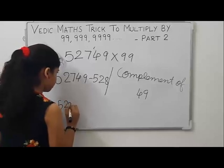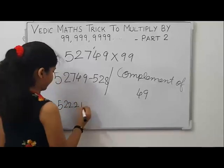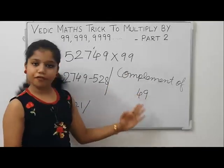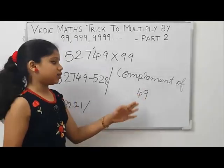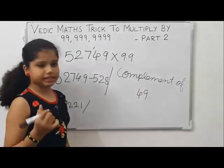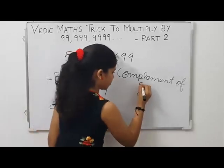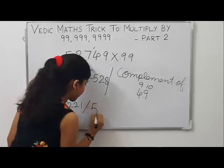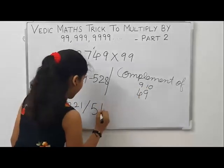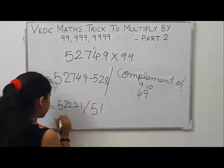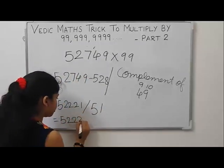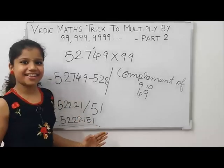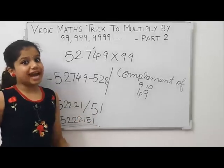Now, 52749 minus 528 is 52221. To get the right hand side, find the complement of 49 by applying the rule all digits from 9 and the last digit from 10. Nine minus four is five, ten minus nine is one. So our answer is 5,222,151. This is our answer.